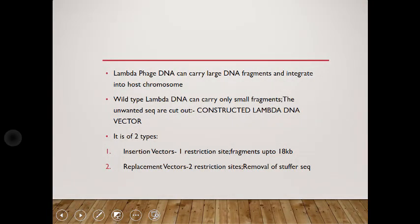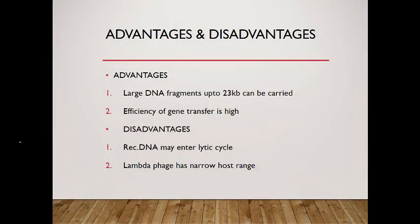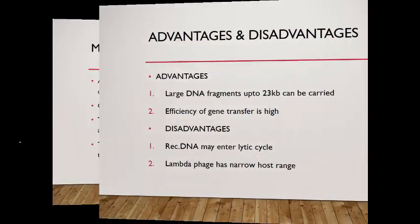Lambda phage DNA carries large DNA fragments and integrates into the host chromosome. Wild-type lambda DNA can carry only a limited fragment size. Unwanted sequences are cut out and a constructed lambda DNA vector is made. It is of two types: insertion vector, which shows restriction site for fragment insertion, and replacement vector, which involves restriction site removal of stuffer sequence. The advantage is that large DNA fragments up to about 23 kilobases can be carried with high efficiency of gene transfer. But the recombinant DNA may enter the lytic cycle, which is a serious disadvantage. It can only replicate in specific strains.